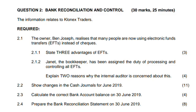For reconciliation, there are three types: bank reconciliation, debtors reconciliation, and creditors reconciliation. For bank reconciliation, make sure you know how to correct your cash journals, understand the framework for the bank reconciliation statement, and know how to correct the bank account balance. For debtors and creditors reconciliation, you need to understand your source documents — what each document is for and how the operation of debtors and creditors works.